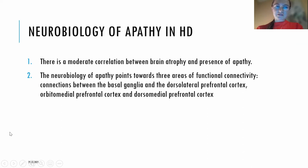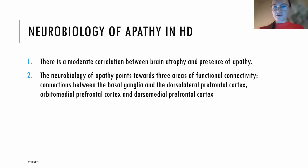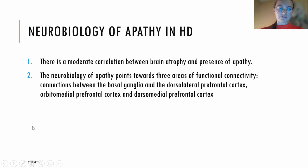Regarding the neurobiology of apathy in Huntington's disease, there is only a moderate correlation between brain atrophy and the presence of apathy, unlike cognitive changes where there is an obvious relationship with brain atrophy. Neurobiological underpinnings of apathy point towards three areas of functional connectivity: connections between the basal ganglia and the dorsolateral prefrontal cortex, orbitomedial prefrontal cortex, and dorsomedial prefrontal cortex.